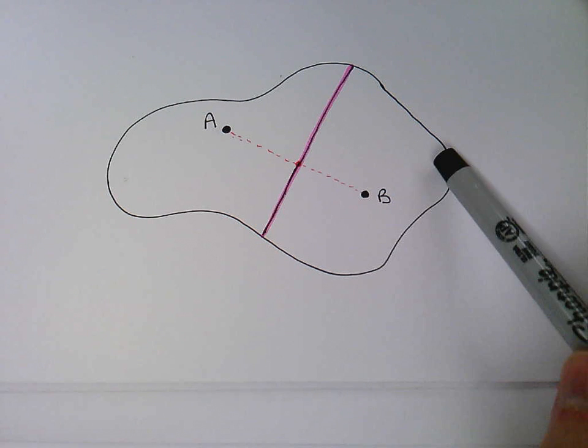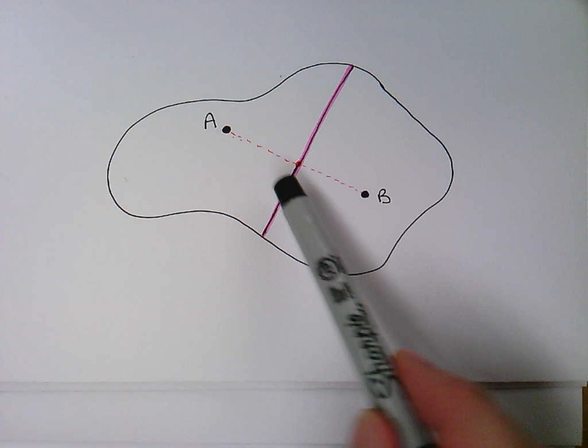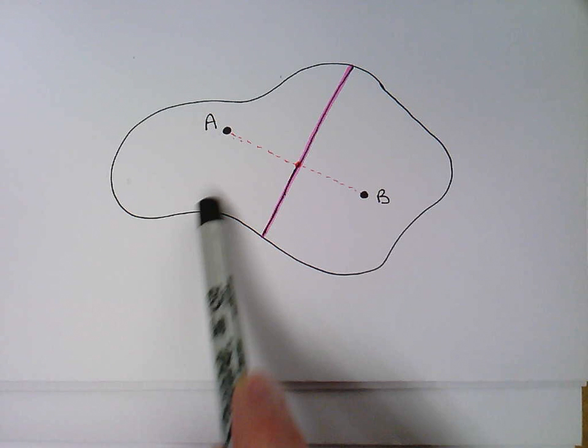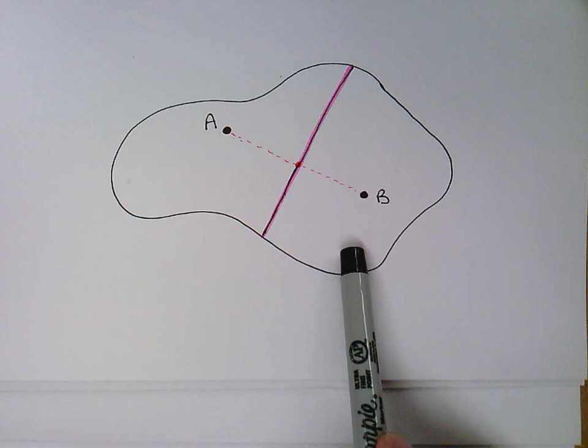So anything over here in this area is going to be closer to B than it is to A and likewise anything on this side of this line will be closer to A than it is to B. So this represents the area for A and this down here the area for B.